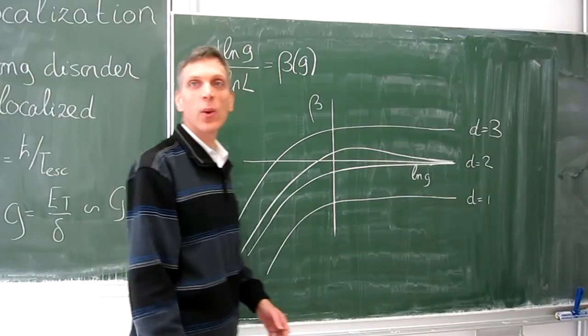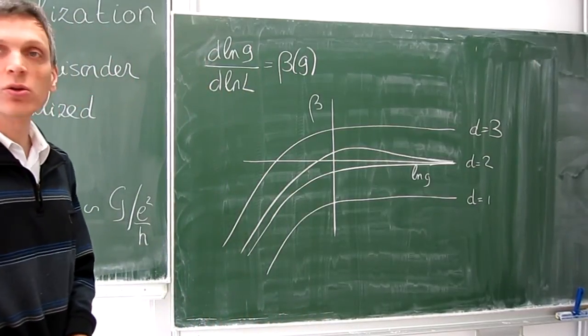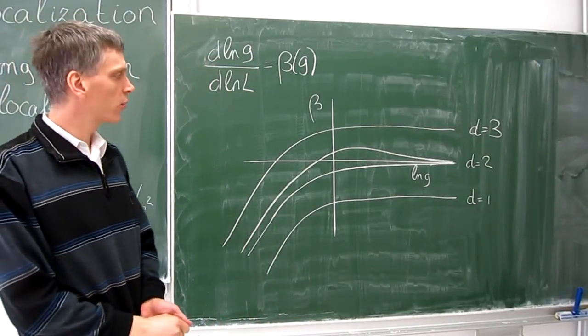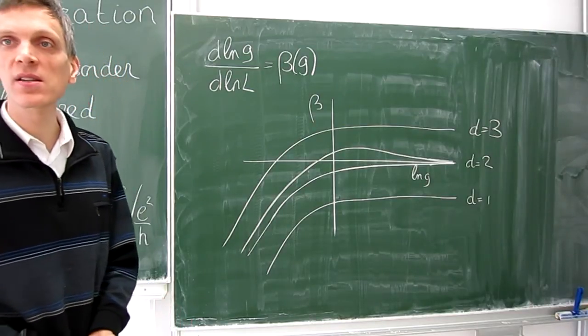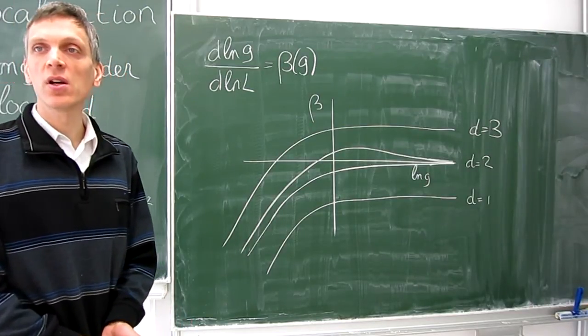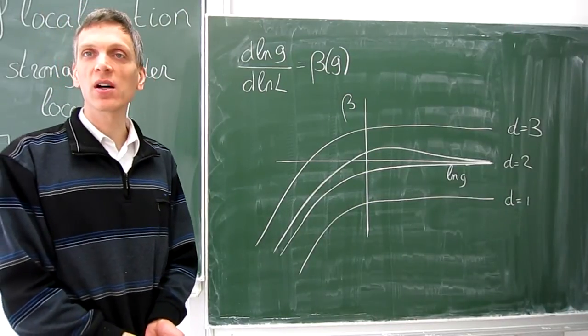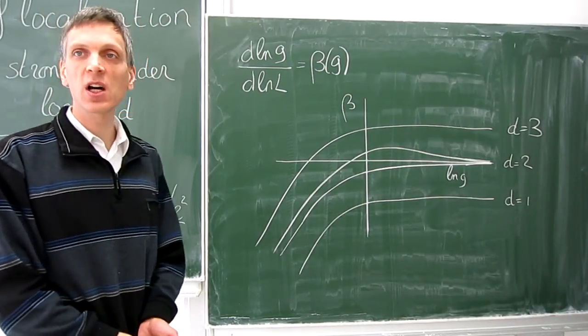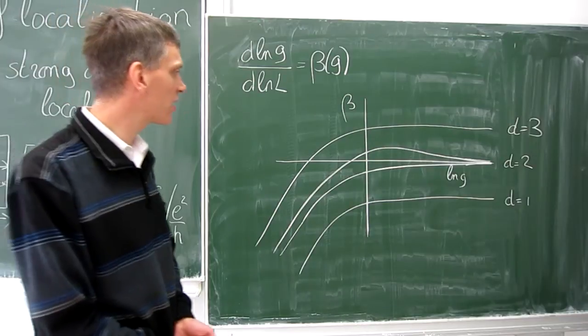From this quite simple picture, a few very important conclusions can be drawn. First, the scaling theory predicts that in one dimension and in two dimensions, except for the symplectic class, eventually all states become localized for arbitrarily weak disorder.